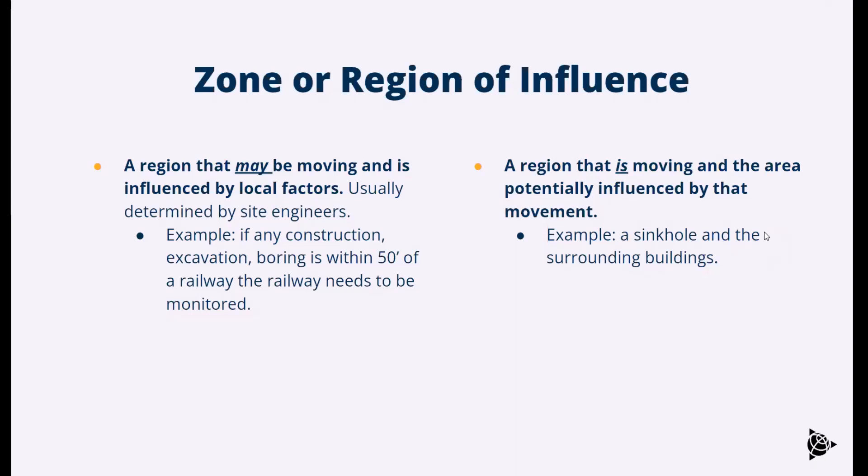The second type of region of influence is something that is already moving. We expect that it might be influencing other areas. This is something like a sinkhole or landslide or a landfill, something that we know is already going to be settling and moving. We're measuring it to make sure that it's not accelerating or getting worse or if it's stopping, we need to know how long it's stopped for. We're really understanding the inherent dynamics of the system.